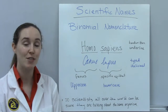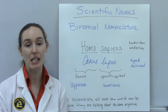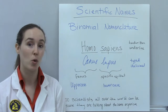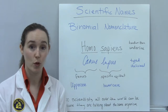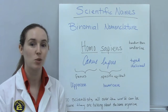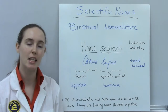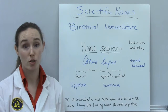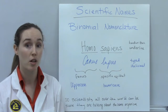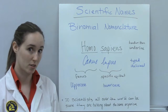Hi, it's Ms. Parrott, and this video is about scientific naming. In the 1700s, a Swedish botanist named Carl Linnaeus came up with a system for classifying organisms and for naming them. This system was called Binomial Nomenclature, and the reason he did this was so that scientists from all over the world, regardless of their own language, could use the same words to describe the exact same organism.